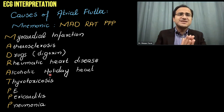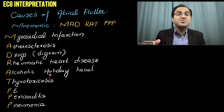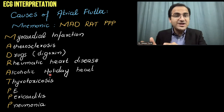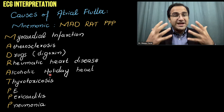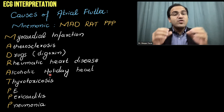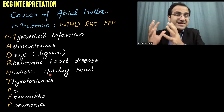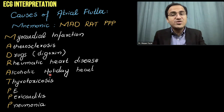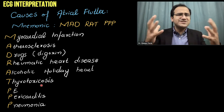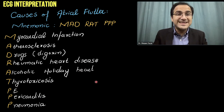In alcoholic holiday heart syndrome, a person who is not drinking alcohol during the week suddenly starts binge drinking during the weekend or holidays. That person then develops rapid atrial contractions and tachycardia. Increased consumption of alcohol causes tachycardia and an increased heart rate, predisposing the heart to develop atrial flutter. Other causes include thyrotoxicosis, pulmonary embolism, pericarditis, and pneumonia.